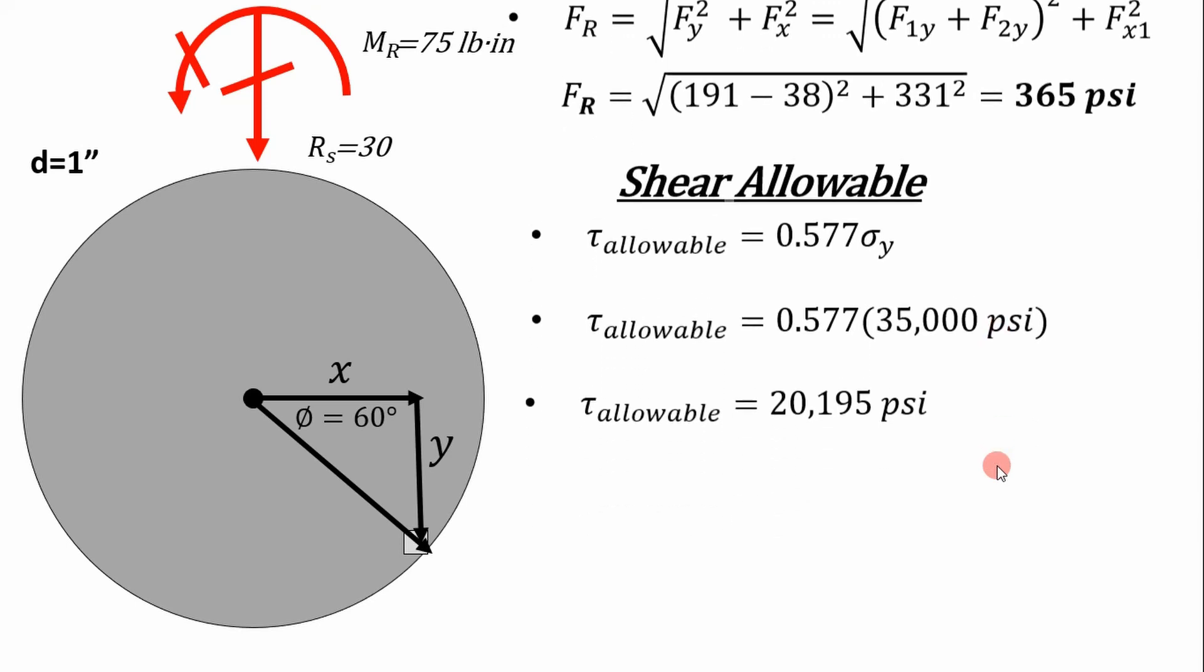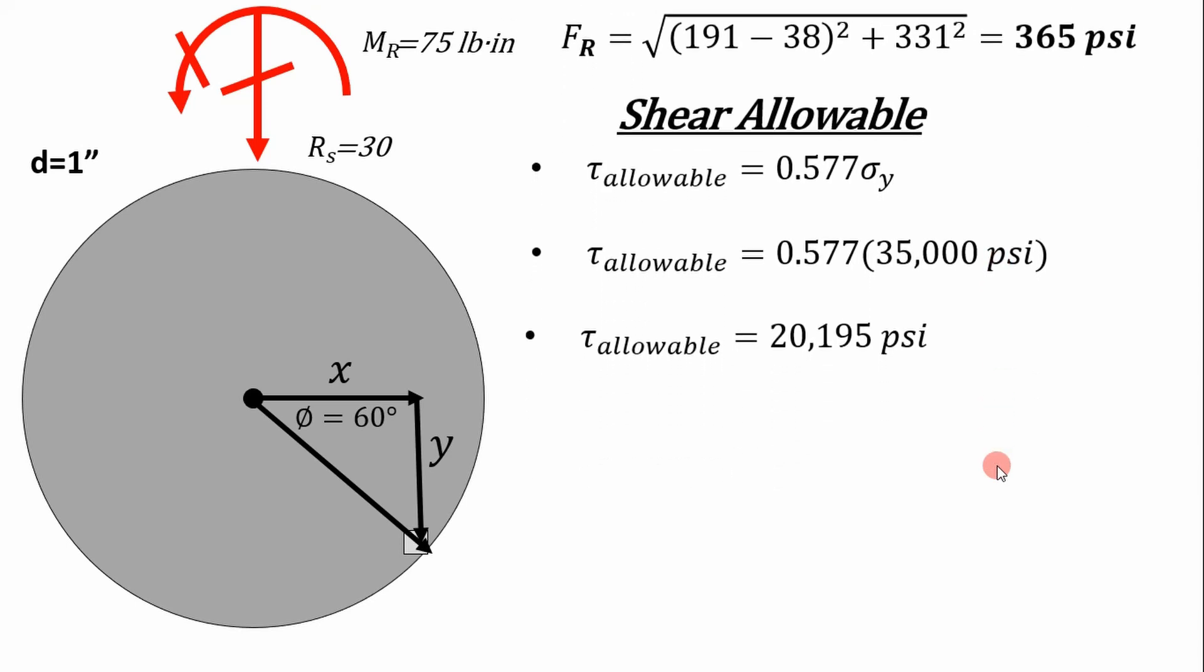But you can't stop there. You have to calculate a margin of safety. They're going to want to see this. Your margin of safety is another fundamental equation you want to know by heart. It's simply going to be your allowable divided by a factor of safety times the load that your element is experiencing minus one. And as long as that's positive, you're good. If it's not, you've got to redesign the thing.